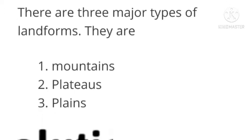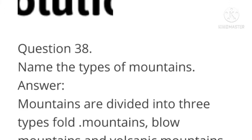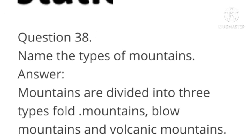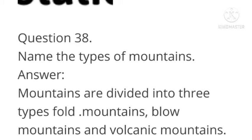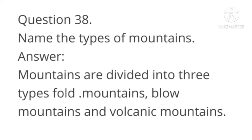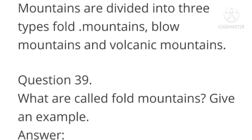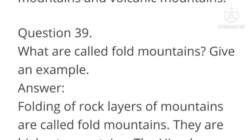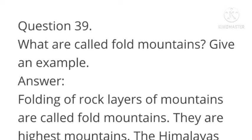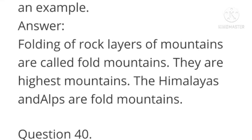Name the types of landforms. Answer: There are three major types of landforms — mountains, plateaus, and plains. Name the types of mountains. Answer: Mountains are divided into three types — fold mountains, block mountains, and volcanic mountains. What are called fold mountains? Give an example. Answer: Folding of rock layers of the Earth form fold mountains. They are the highest mountains. The Himalayas and Alps are fold mountains.